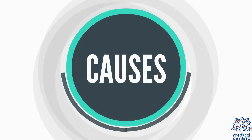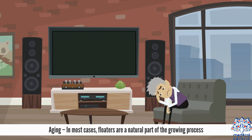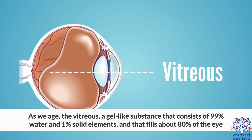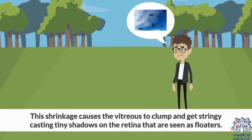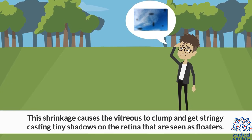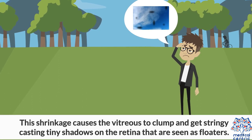There are various causes for the appearance of floaters. In most cases, floaters are a natural part of the aging process. As we age, the vitreous — a gel-like substance that consists of 99% water and 1% solid elements, and fills about 80% of the eye, helping it maintain a round shape — slowly shrinks. This shrinkage causes the vitreous to clump and get stringy, casting tiny shadows on the retina that are seen as floaters.